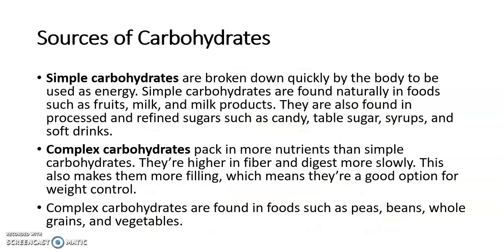Simple carbs are broken down quickly by our body. They come in two forms: natural simple carbohydrates, such as those found in fruits and milk, and processed carbohydrates, such as candy, syrup, and soft drinks.